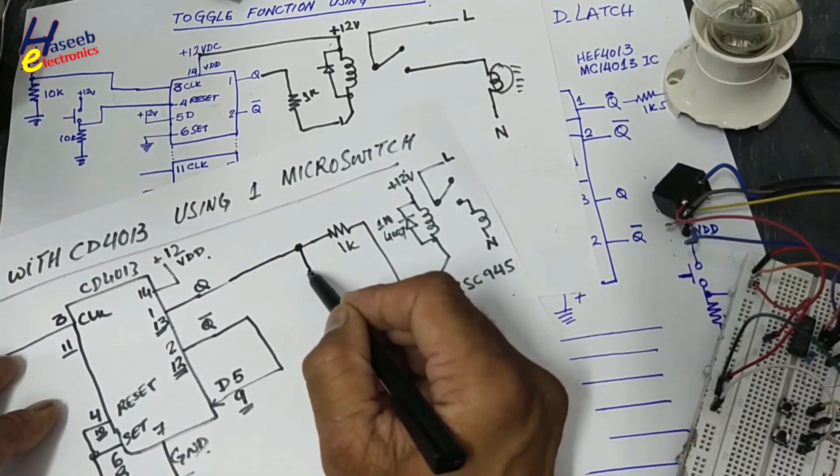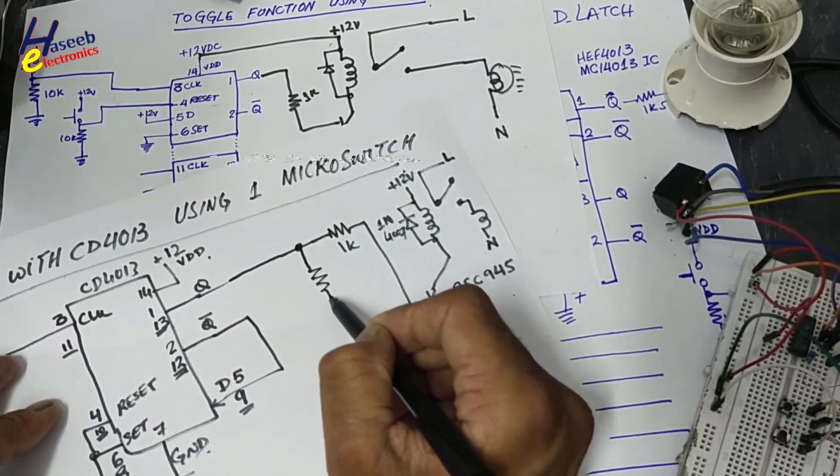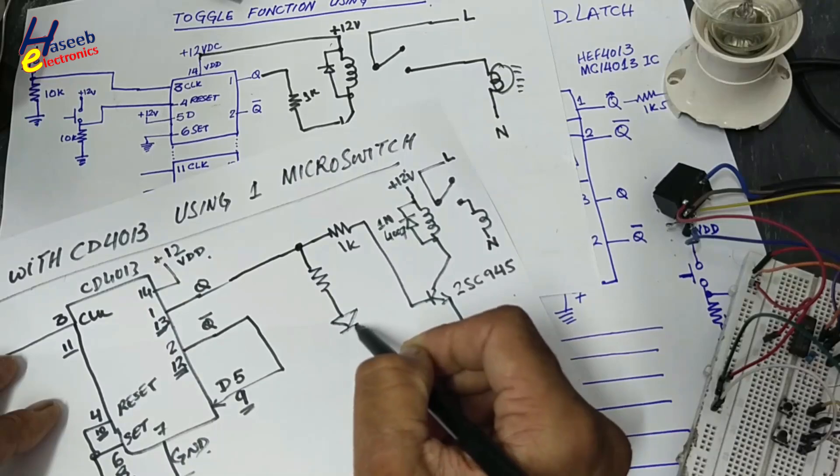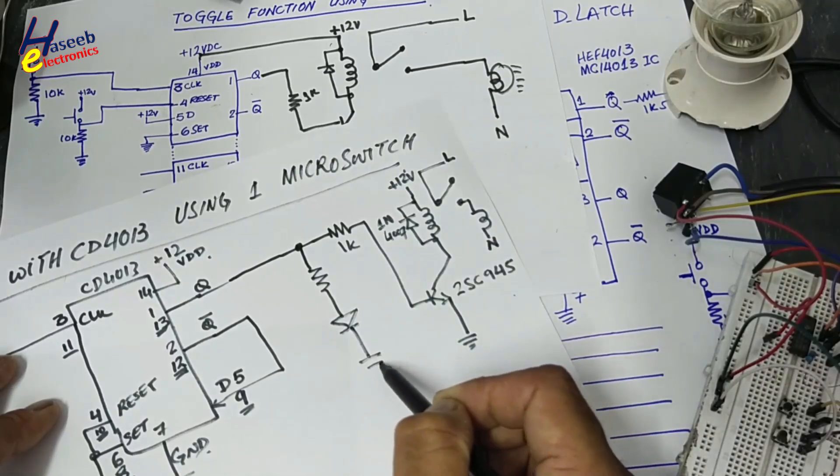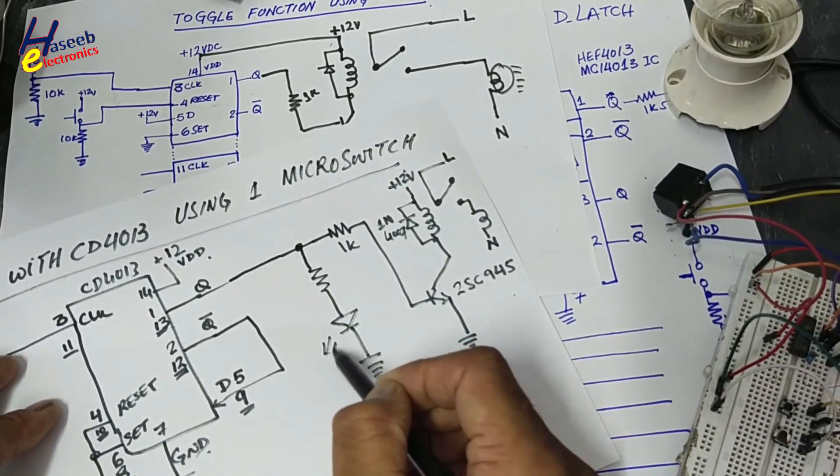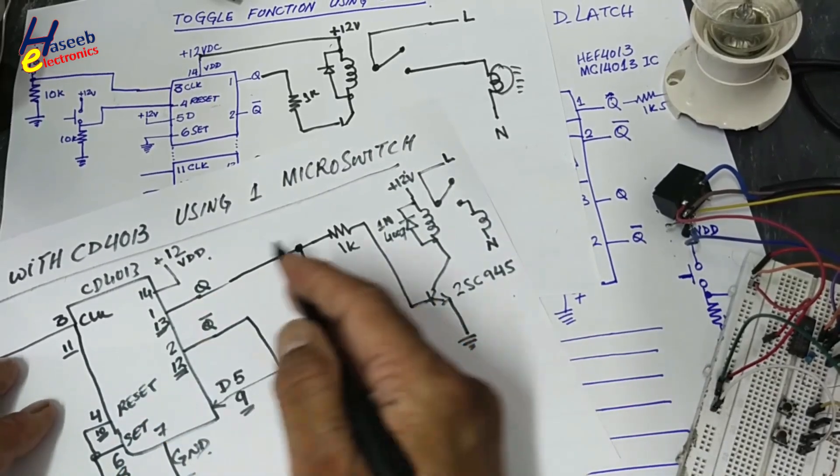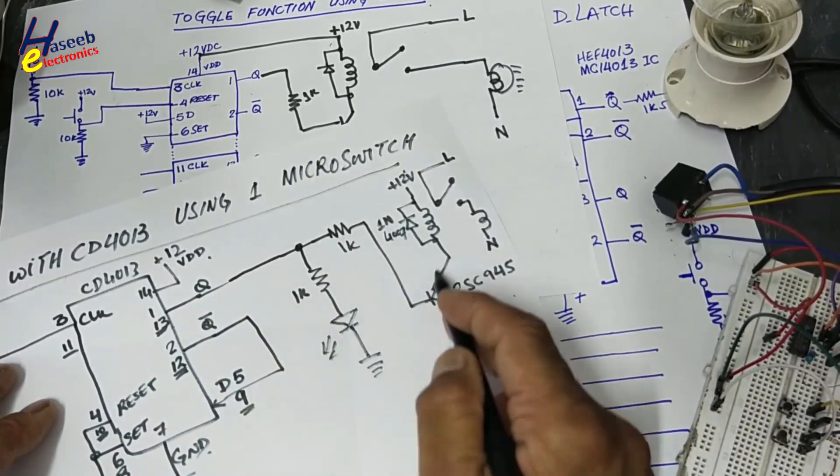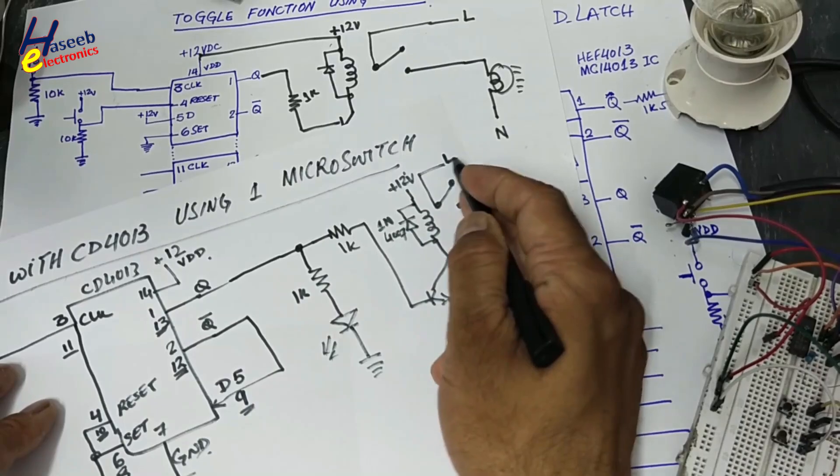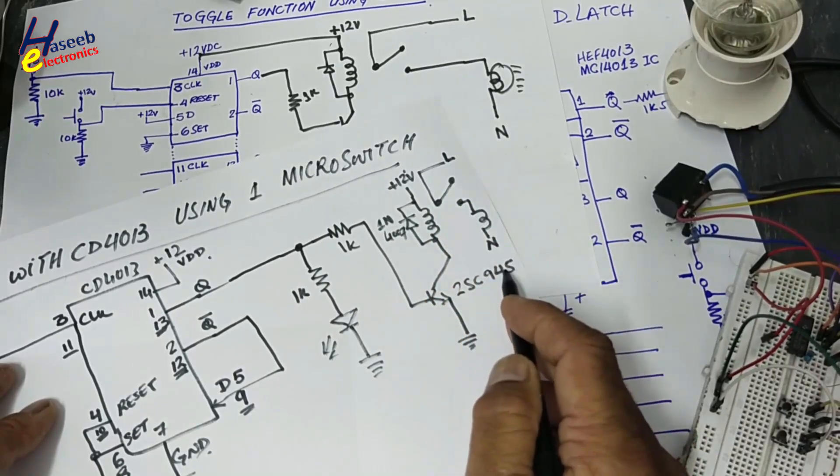Because here is line input and here is load. To display the signal status, we will connect LED. 1K resistor. If Q is high, LED will indicate. Relay will turn on and it will close these contacts and lamp will illuminate.